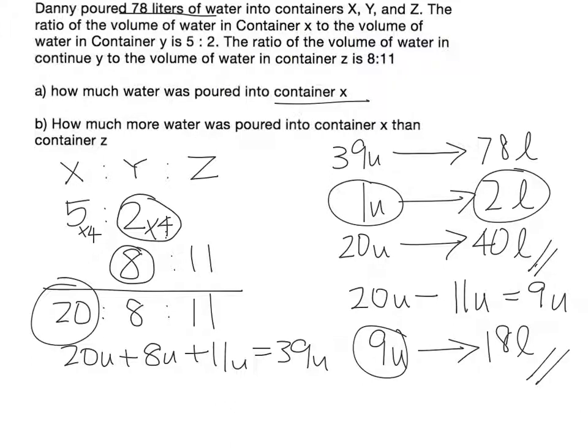More water was poured into container x as compared to container z, who has only 11 units. So that's the answer for part B. Thank you.